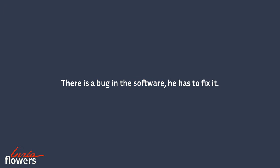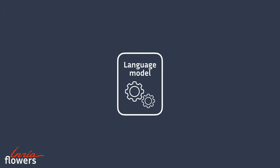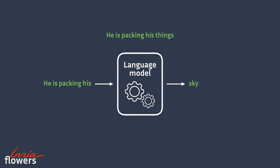Concretely, how can we get a model to perform this next word prediction task? This is called training. We extract text from the internet, and the model will adjust its parameters in order to perform as best as possible on the next word prediction task on this data.